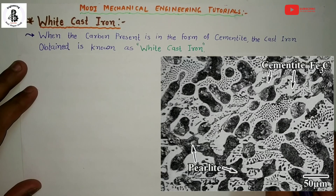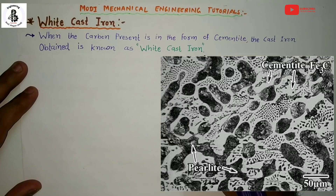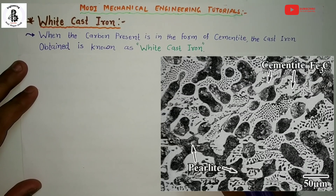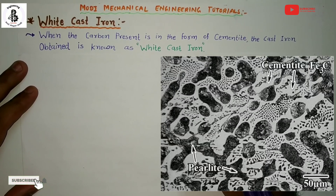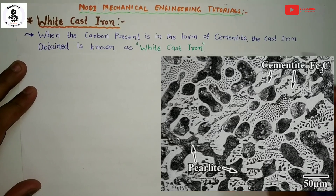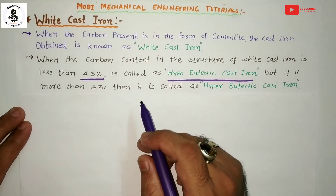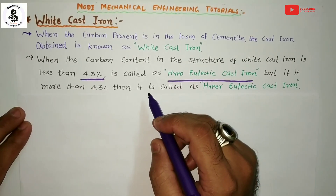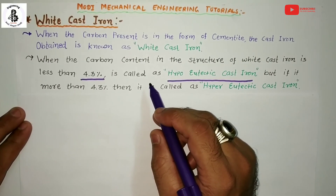You can see the microstructure of white cast irons. In white cast irons, the carbon present is in the form of cementite. If you take a cross-sectional area of that material, the cementite will be present and it will have a white appearance — that's why it is known as white cast iron. As per the iron-carbon diagram, cast iron contains more than 2% carbon up to a maximum of 6.67% carbon.